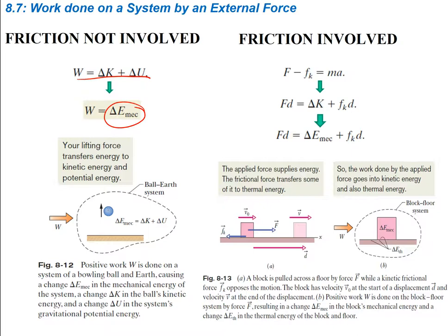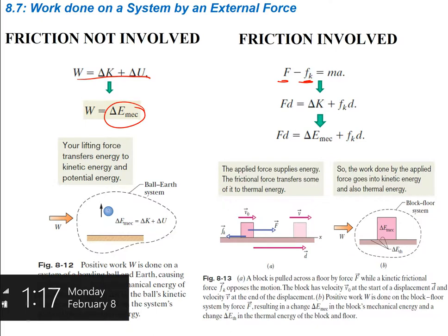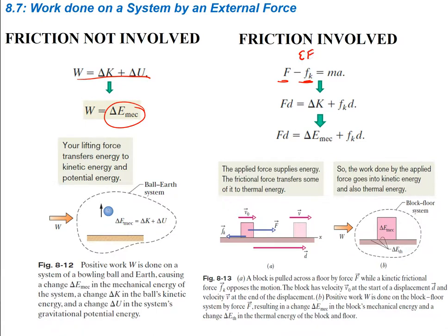Now let's look at friction involved. If we have a force applied and there's an opposing frictional force, we set that equal to Ma — this comes from our net force equals Ma. So our two forces are the applied force and a frictional force opposing it. We know that the work done is Fd, and that's going to be the change in kinetic plus the frictional force times the distance, looking at the work done by both of these forces added together.